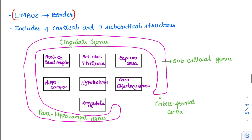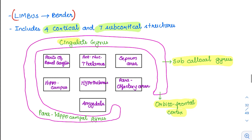Here they have included four cortical areas and seven subcortical areas. Coming to the cortical areas first, there are four important ones: the orbitofrontal cortex, the subcallosal gyrus, the cingulate gyrus — which we have already seen is involved in the medial processing of pain — and the para-hippocampal gyrus.